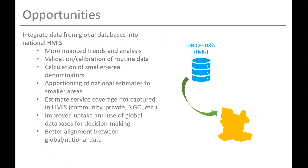Looking at opportunities we have seen for integrating global datasets into national HMIS — the primary focus is how we can get more data to countries in the systems and platforms they're already using in a way that meets their specific data needs. This process enables: more nuanced trends and analysis, validation and calibration of routine data and coverage estimates, calculation of smaller area denominators, apportioning national estimates to smaller areas, and estimating service coverage not currently captured in HMIS. For example, if you're not integrating community level data or don't have good reporting from the private sector, you can offset those challenges by pulling in population-based coverage estimates from surveys.